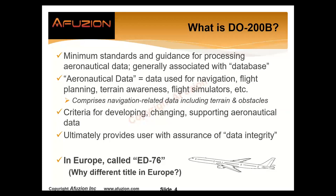We're going to talk about the evolution. In aviation, the ecosystem is always expanding. What are the criteria for developing, changing, and supporting aeronautical data? Aeronautical data is all data associated with aircraft safety — not just data on board the aircraft, but also on the ground: CNSATM, communication navigation systems, air traffic management, DO278. Ultimately, it provides a user with an assurance of data integrity.